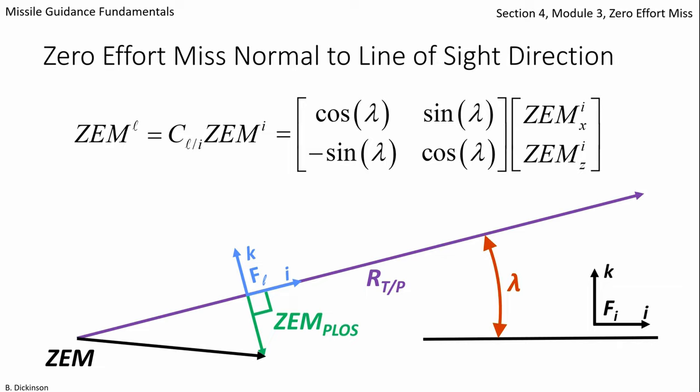And then we can take the k component, the z component of that zero effort miss vector resolved in the line of sight frame, this frame here, to get the zero effort miss perpendicular to the line of sight.